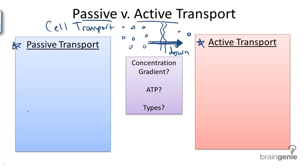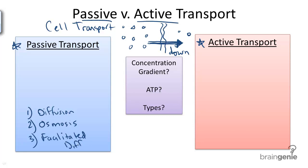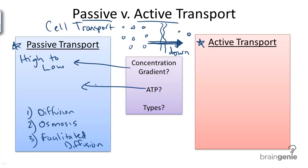This incorporates three different types of transport. Diffusion moves down the concentration gradient. Osmosis is the movement of water down its concentration gradient specifically. And facilitated diffusion uses a transport protein to move substances down their concentration gradient. In passive transport, we go from a high solute concentration to a low solute concentration, and no ATP is required in any of these three cases.